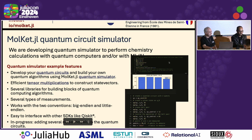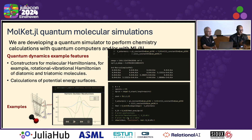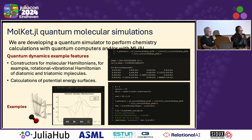On the right, we see a few screenshots of the code and the kind of simulation and how it is operating gates and so on. The second part is the quantum molecular simulation. That's the main purpose of the package, because we also develop a quantum dynamics simulator. We have built-in constructors for molecular Hamiltonians. Any molecular system has to be described as a Hamiltonian, and those Hamiltonians are quite complicated and computationally intensive — for example, rotational vibration Hamiltonians of diatomic and triatomic molecules.